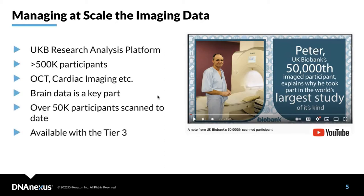The DNA Nexus UK BRAP image analysis platform is powered by DNA Nexus and manages large-scale biomedical data of various types — not only imaging, but also genomics and other relevant phenotypes — for more than 500K participants. Examples of imaging data on the platform include optical coherence tomography imaging, cardiac imaging, and many other resources. A key part is brain data, with over 50K participants scanned to date. This data is available with Tier 3 access.